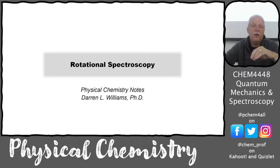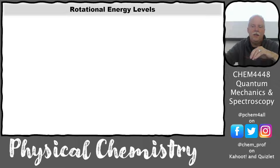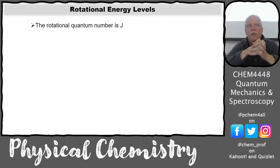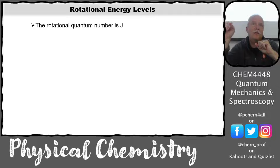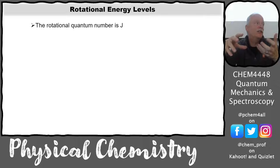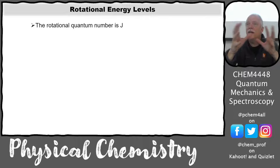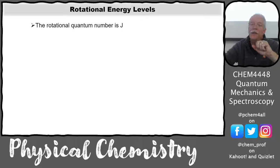In a nonlinear molecule we have three rotations and things can get a little more complicated. We now have a new quantum number. We've been using n for the particle in a box, and v for the vibrational quantum number. Be careful — in notes and literature it's difficult to tell between v and the Greek character nu, which is the vibrational frequency. Context is necessary to know which one is being discussed.